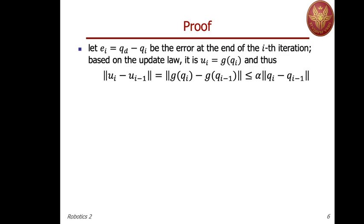We make a conservative bound: we add and subtract the desired Qd from the last term, building the errors Qᵢ − Qd and Qd − Qᵢ₋₁ — the error at the end of iteration i and the error at the end of the previous iteration. We replace this with the sum of the two norms instead of the norm of the sum. This is quite a conservative step, which will make this condition sufficient in fact.